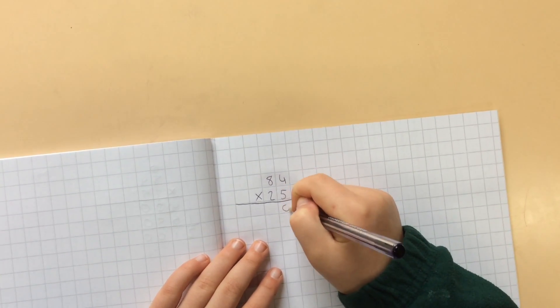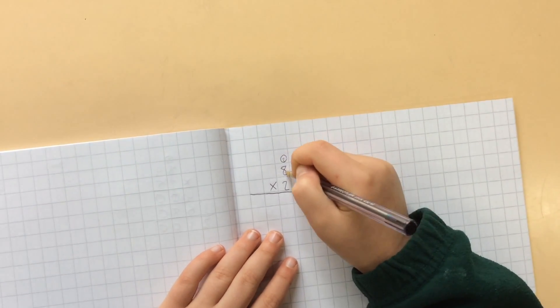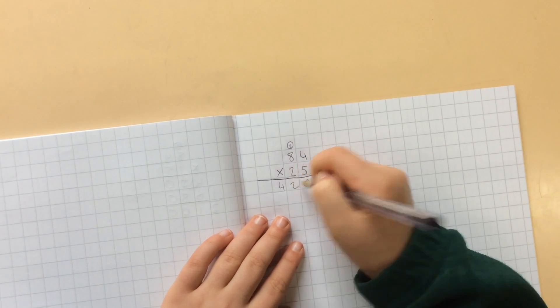So 5 times 4 is 20, carry my 2 over here. And then 5 times 8 is 40, carry the 2, makes 42, or 420.